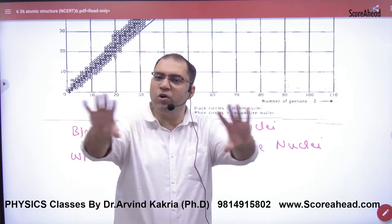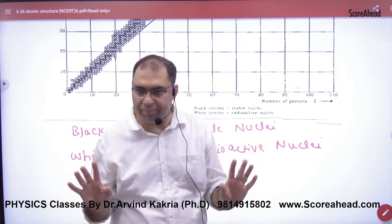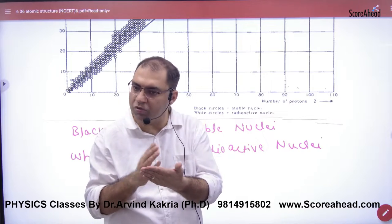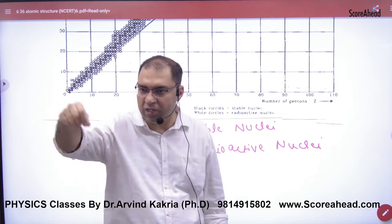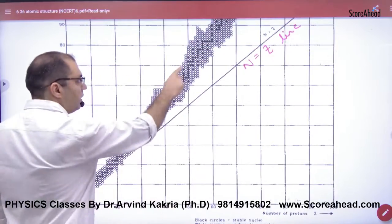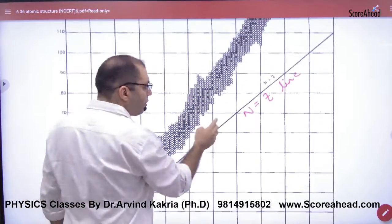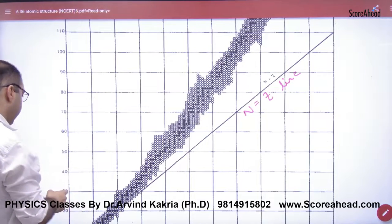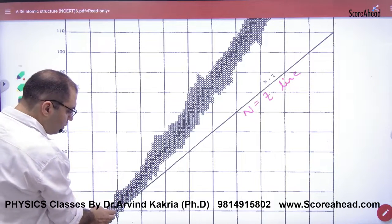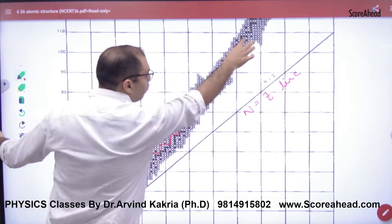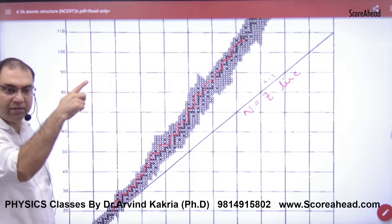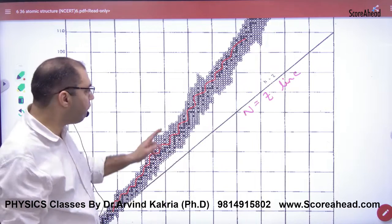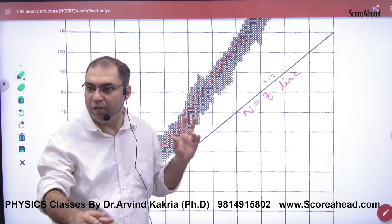So we took the periodic table. In the periodic table all the elements, nucleus, atom and the number of neutrons and protons. Plot. So black color circles and some white circles. So black color, these are stable nucleus. These are stable nucleus.